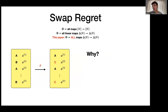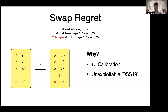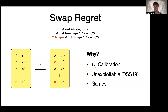So why do we care about swap regret? It's an inherently stronger benchmark, and there are specific benefits: performance measures like calibration fall under the umbrella of swap regret, and running a no-swap-regret algorithm provides robustness against an adversary who knows exactly what algorithm you're running — which doesn't hold for external regret. But the best motivation is learning in games.